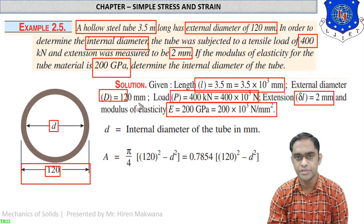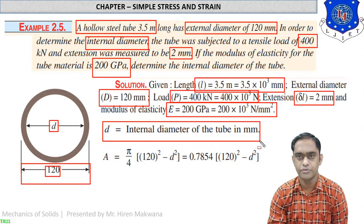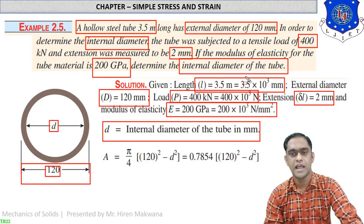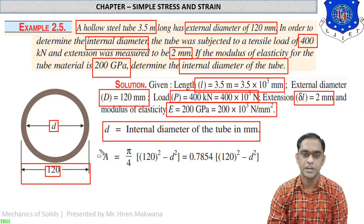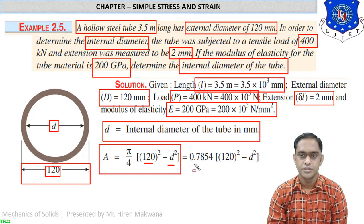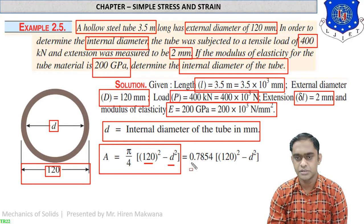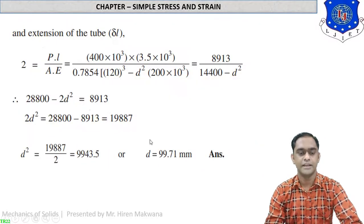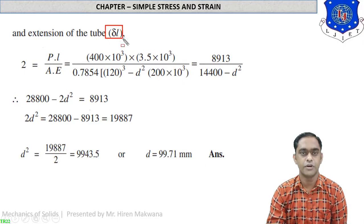Giga pascal is converted into newton per mm square. Length is 3.5 meters means 3.5 × 10³ mm, and the external diameter is 120 mm. Let d be the internal diameter which we have to find. The cross-sectional area of the tube is A = (π/4)(D² − d²), external diameter minus internal diameter, giving 0.7854(14400 − d²) mm².